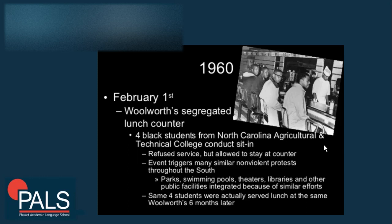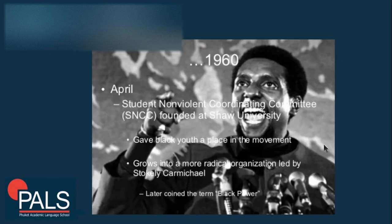That same year, in April, the Student Nonviolent Coordinating Committee was founded at Shaw University. This gave black youth a place in the movement, and it grew into a more radical organization led by Stokely Carmichael. Stokely later coined the term "black power."